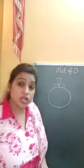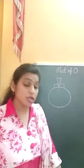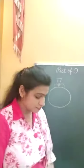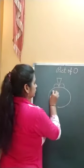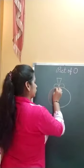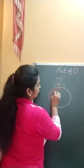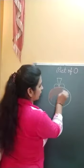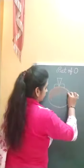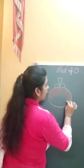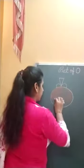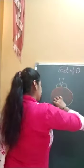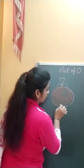Now we will color the orange. Orange is of which color? Kuan se color ka hota hai orange? Yes, orange is of orange color. Now we will fill orange color here. Do dark coloring in one direction only. Eki taraf color karna hai. And do dark dark coloring. Dark dark color karna hai. You have to fill the white space properly — achche se white space fill karne hai.